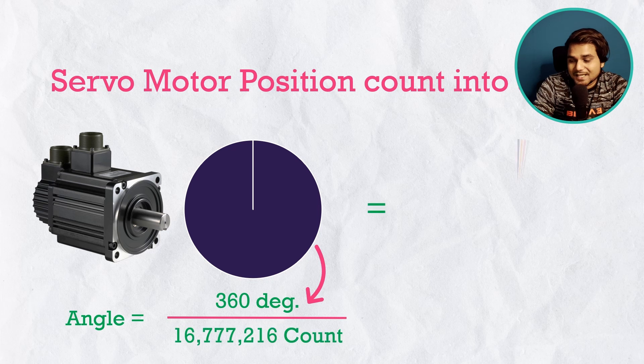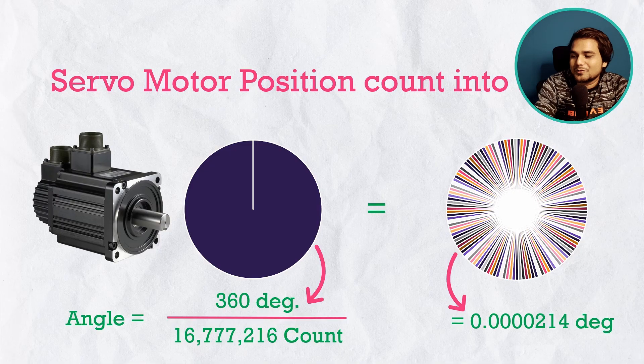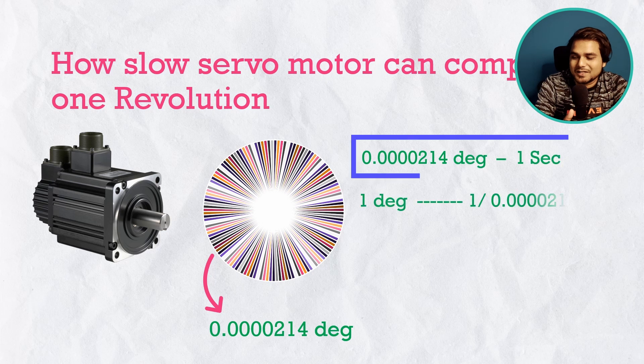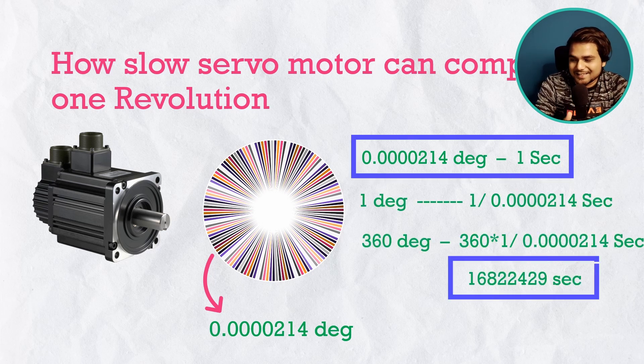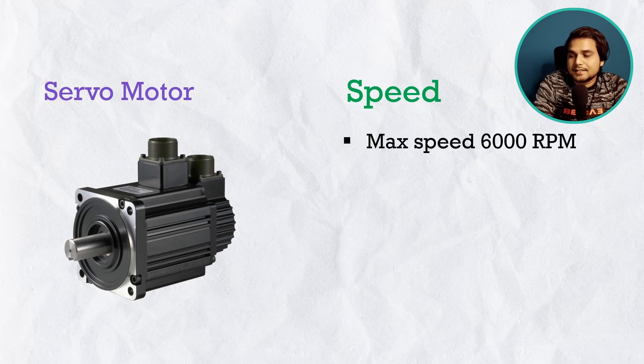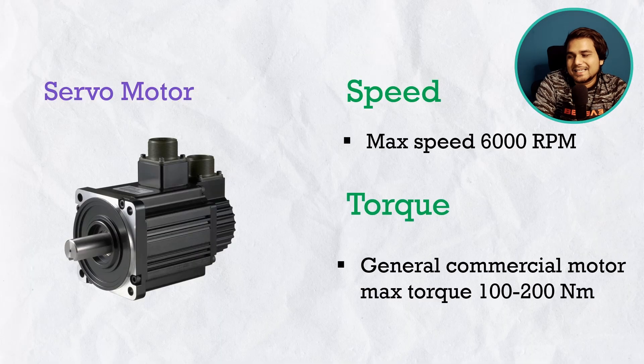With a 24-bit encoder, dividing 2^24 by 360° gives an angular resolution of approximately 0.000214°. To illustrate: if the servo motor rotates at that angle per second, it would take about six months to complete one full revolution — meaning we can achieve extremely low minimum speeds. Maximum speed for general industrial servo motors is around 6000 RPM. Commercial industrial servo motors typically offer maximum torque between 100–200 Nm, depending on the motor type.